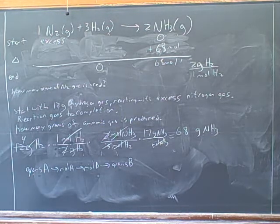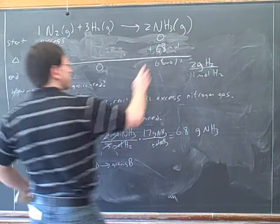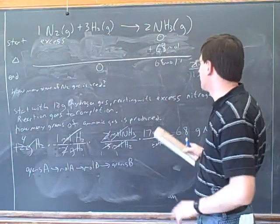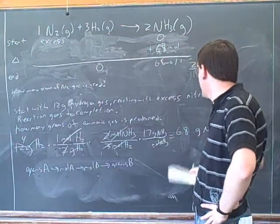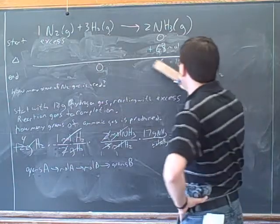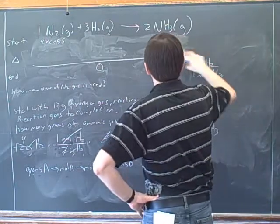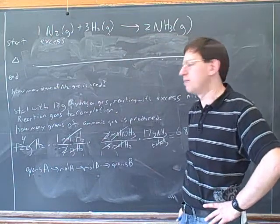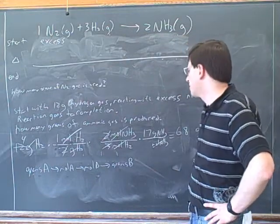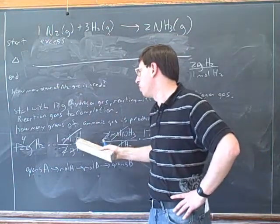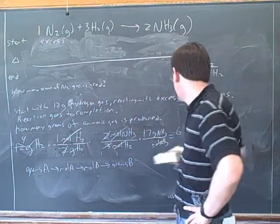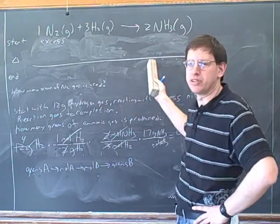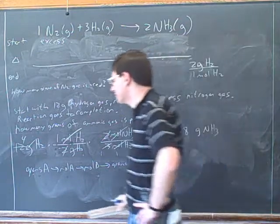I still messed up — this isn't 68 moles, it's 68 grams. So actually, going back for a second, we never got any numbers to put into the table. So the start-change-end table is kind of useless on this problem. We don't need the start-change-end table here, because we never actually calculated moles — we just buried that inside the conversion. We just figured out grams.